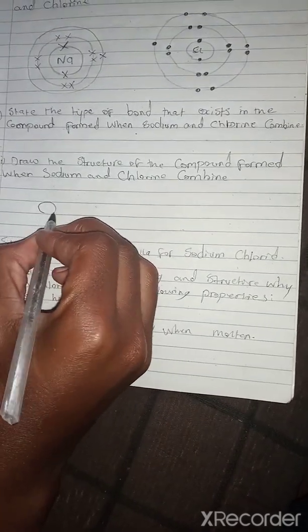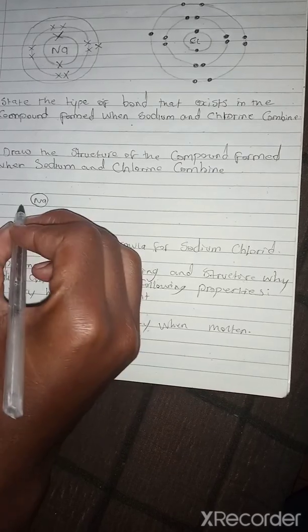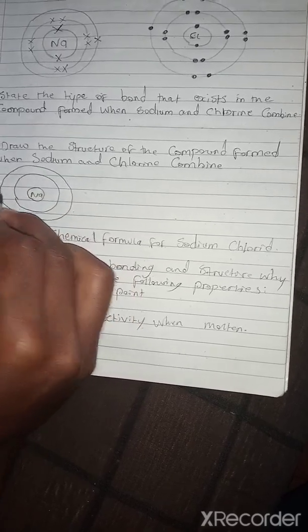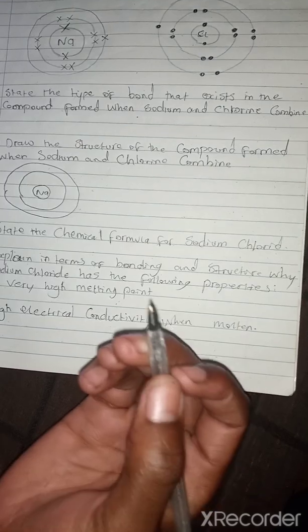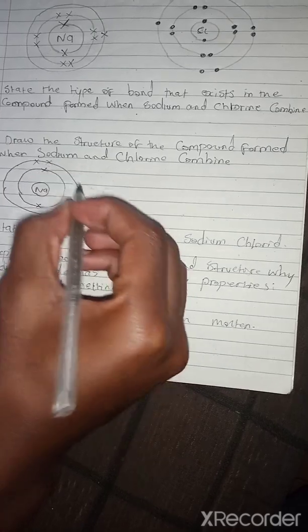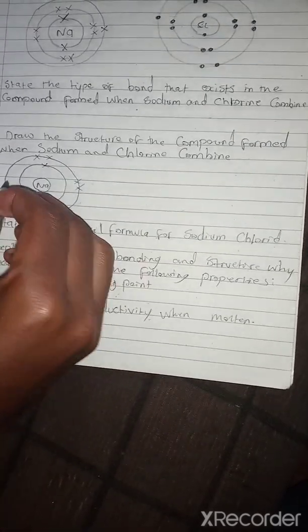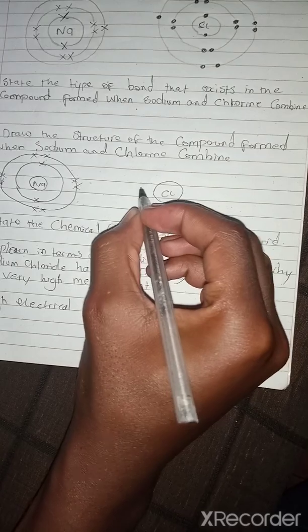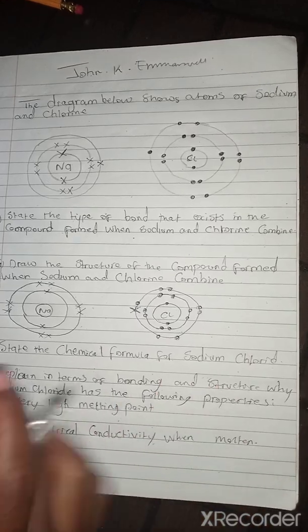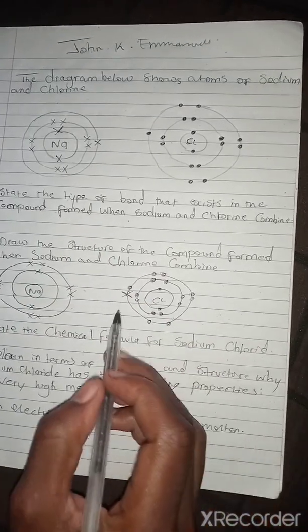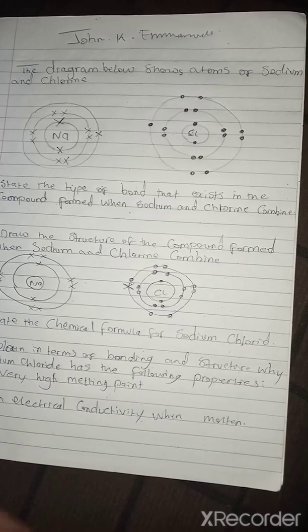For sodium, the electron configuration is 2, 8, 1 — so sodium has lost one electron. For chlorine, the electron configuration is 2, 8, 7 and it gains one electron to become 2, 8, 8. This is how the structure is supposed to be drawn.